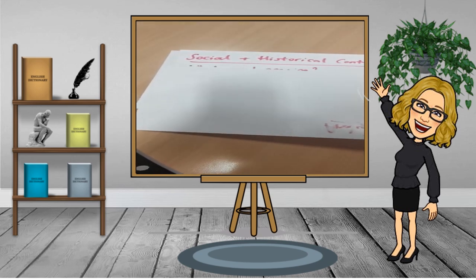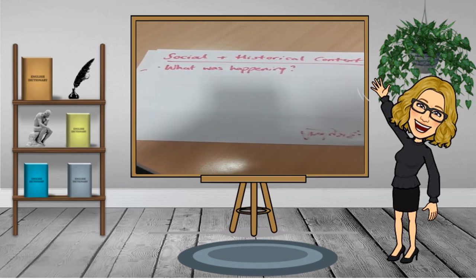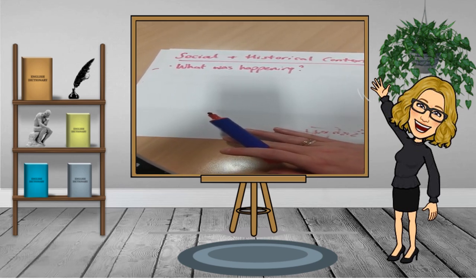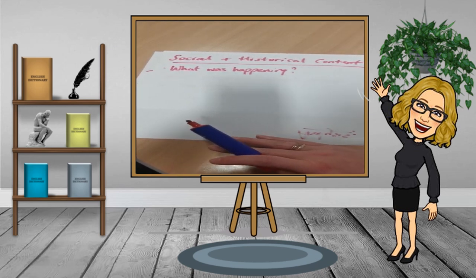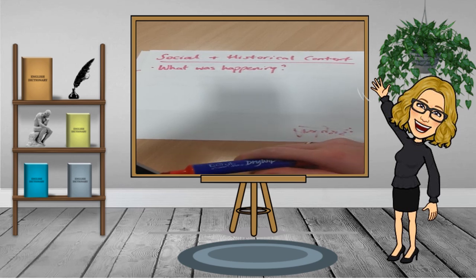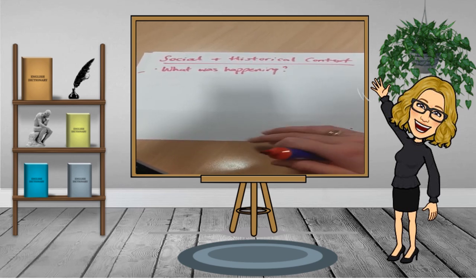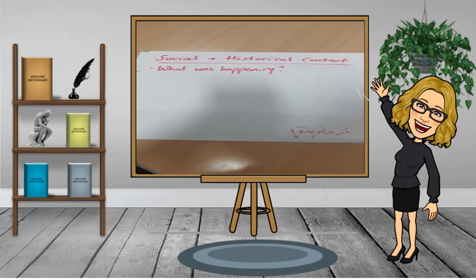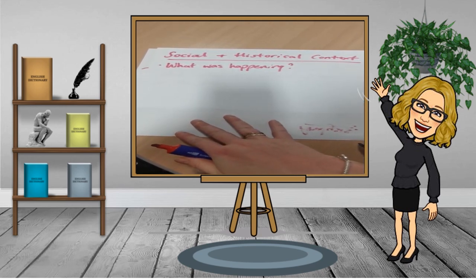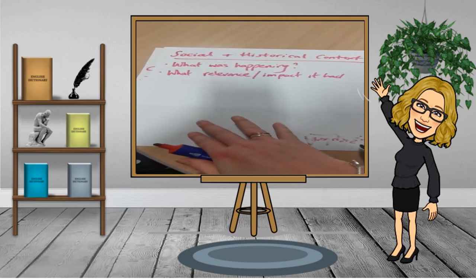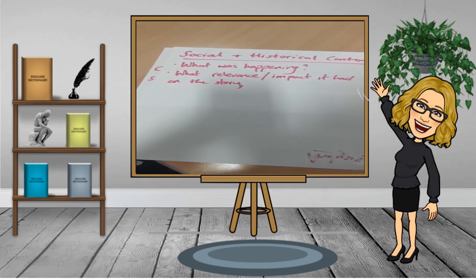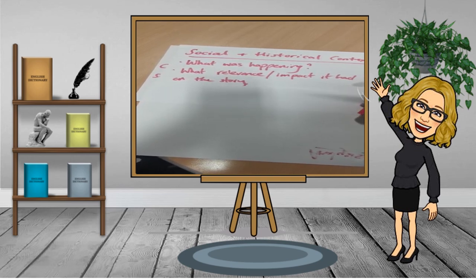The social and historical context is basically what was happening at the time. What was going on when J.B. Priestley wrote An Inspector Calls, when Shakespeare wrote Macbeth, and when Robert Louis Stevenson wrote The Strange Case of Dr. Jekyll and Mr. Hyde. You will need to understand what relevance and impact the context had on the story or play.